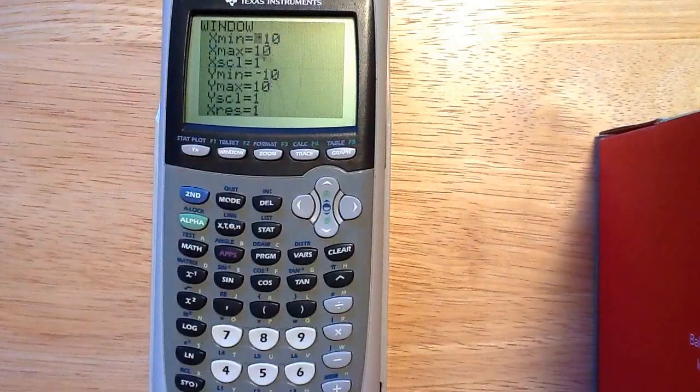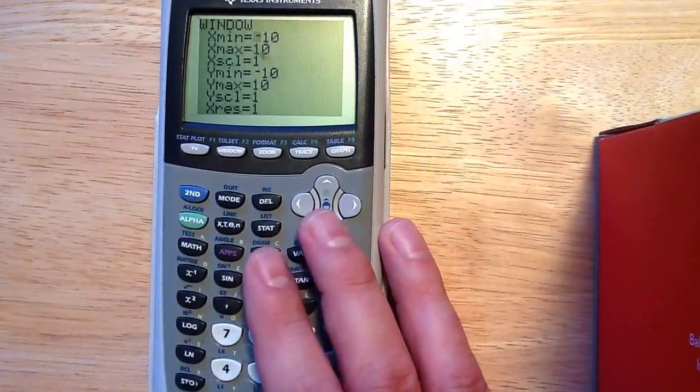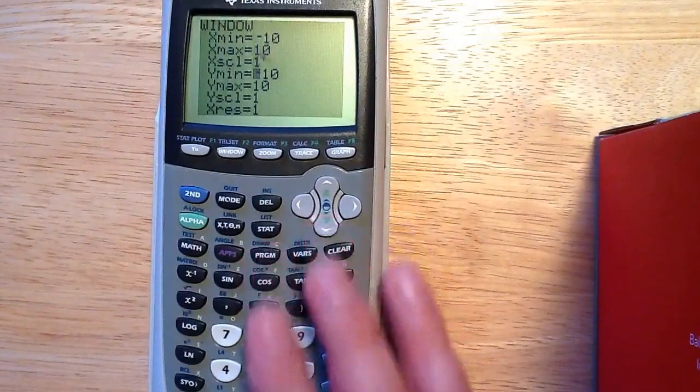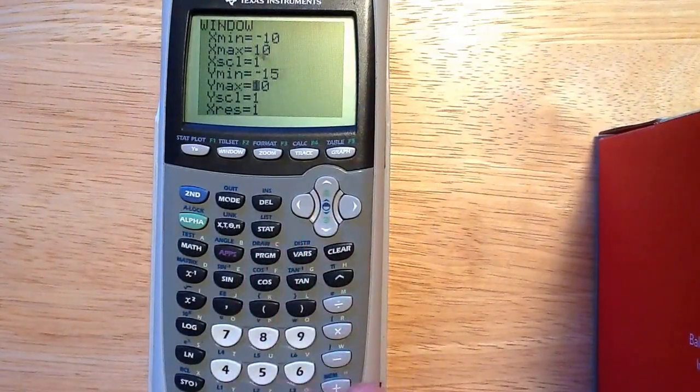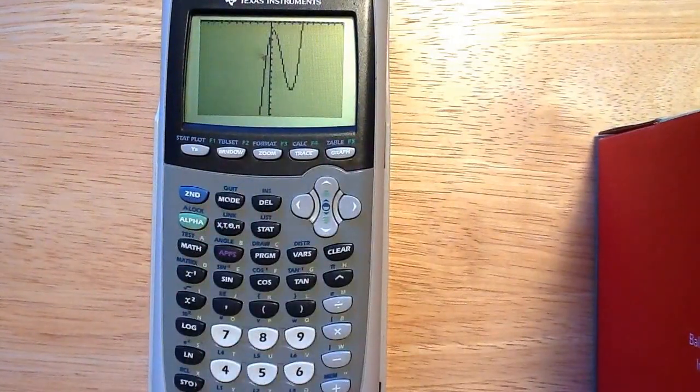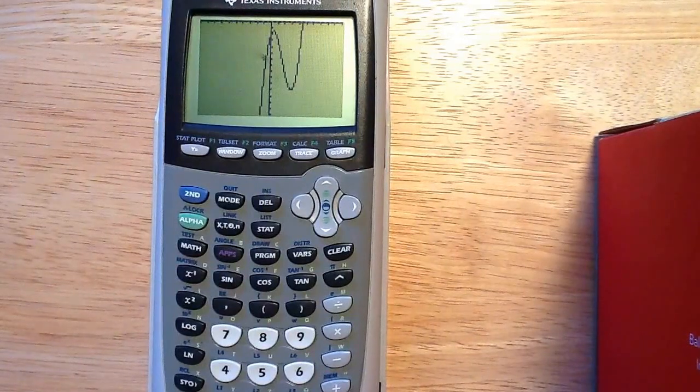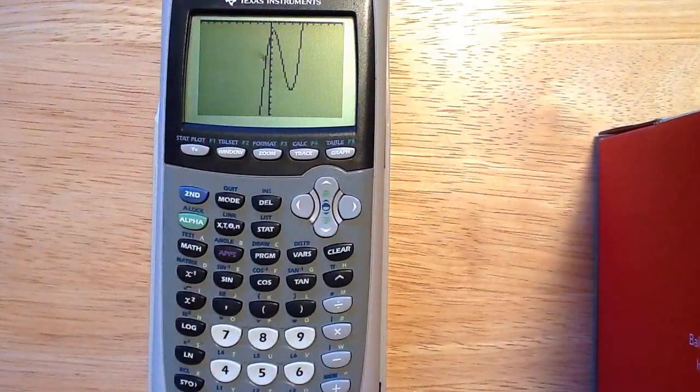So I'm going to change my window, especially now that I know where I'm supposed to look, to from negative 15, I think might work, to 0. Okay, now I can see both the local max here and the local min there and I'm ready to solve them.